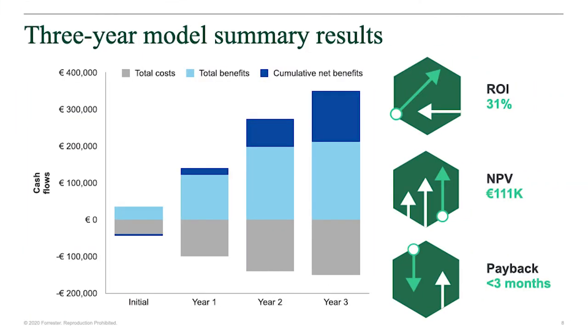Bringing this all together, here is the results summary in a three-year cash flow chart with all risk-adjusted costs and benefits. Forrester's Total Economic Impact analysis found that the interviewed organization experienced benefits of nearly 470,000 euros over three years versus costs of 358,000 euros. This presents a strong business case in terms of a short payback period, 31% ROI, with a €111k net present value.